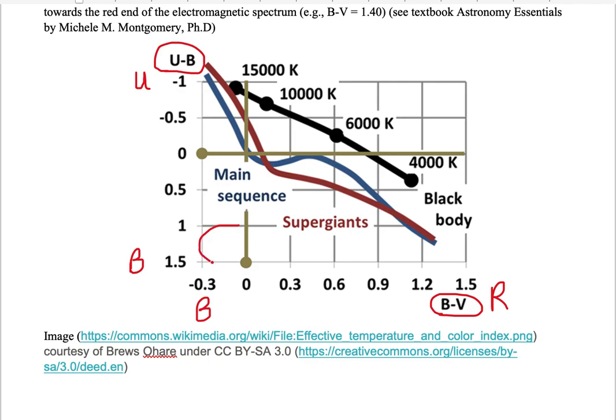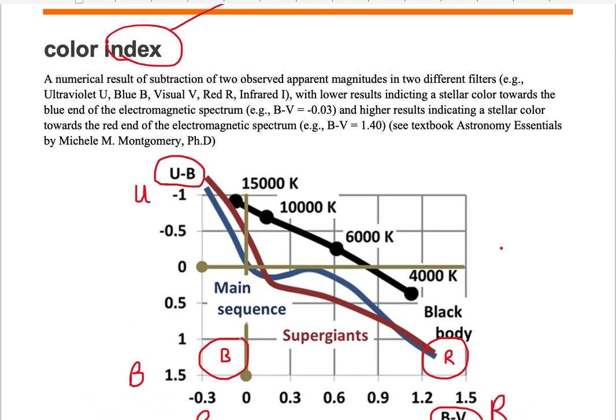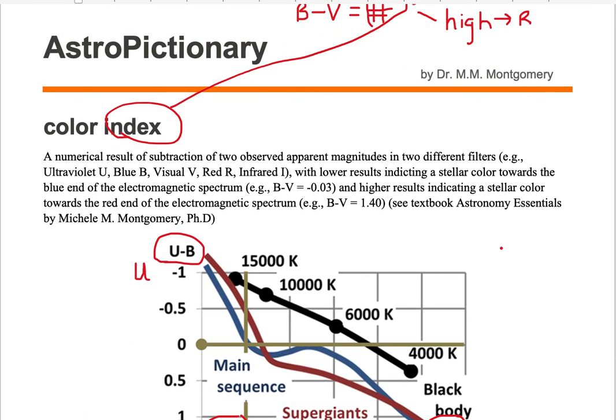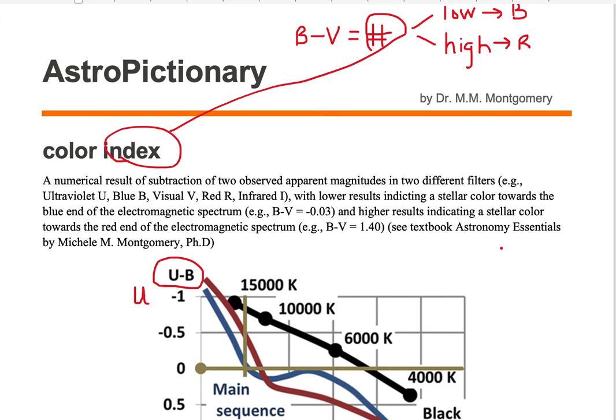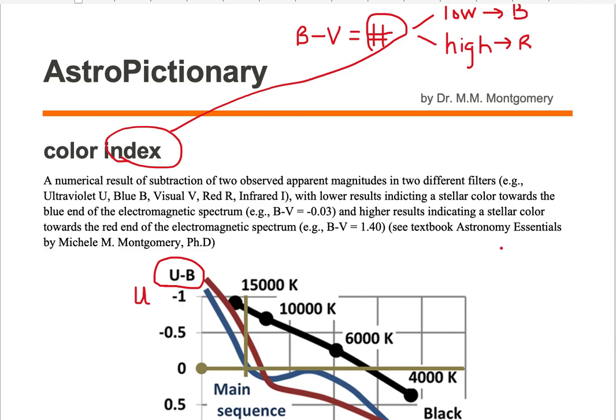Objects in the lower left corner appear more blue, and objects in the lower right corner appear more red. A color index is a numerical value that gives the observer an idea of which end of the electromagnetic spectrum the stellar color appears more like.